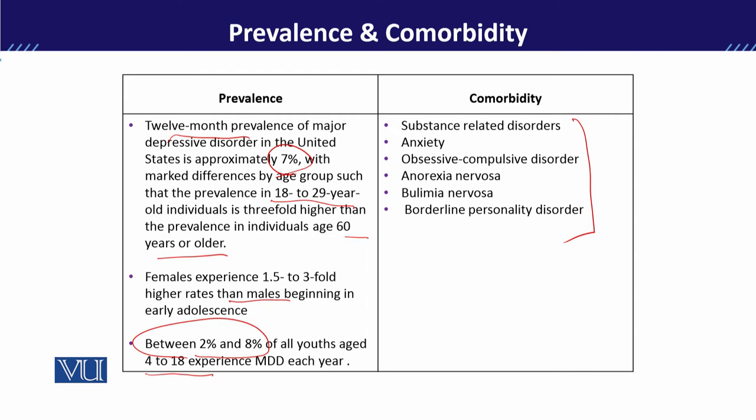Anxiety is another comorbid condition, which includes different types of fears — phobias, social anxiety — and these are conditions that children or adults may present with.